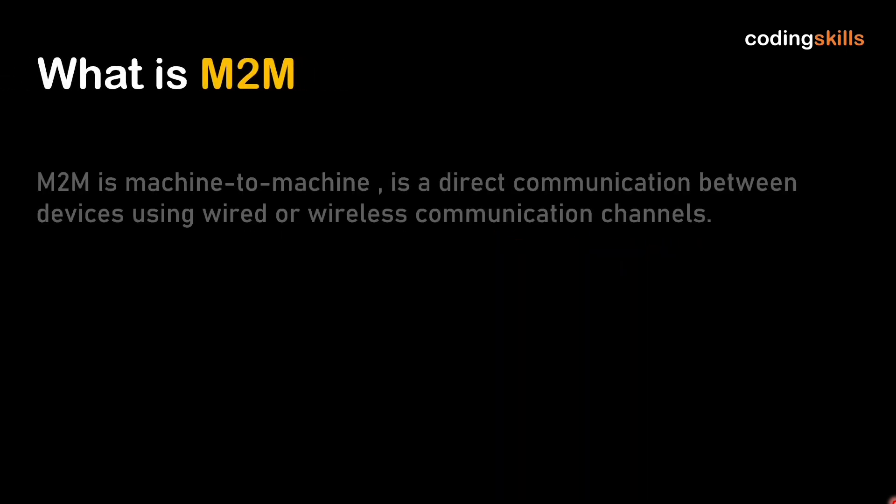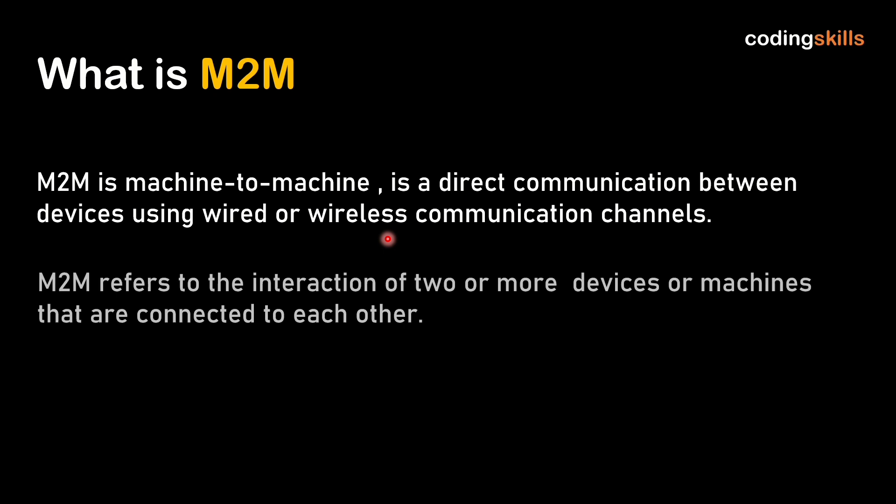What is M2M? M2M is machine-to-machine, a direct communication between devices using wired or wireless communication channels. It refers to the interaction of two or more devices or machines that are connected to each other.